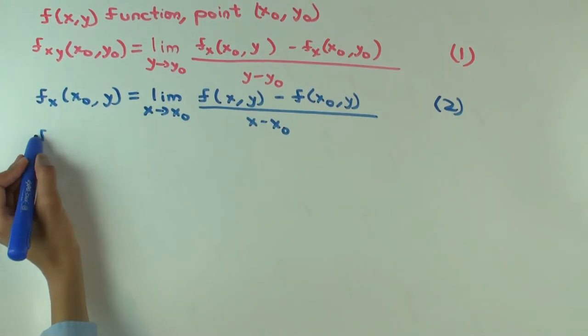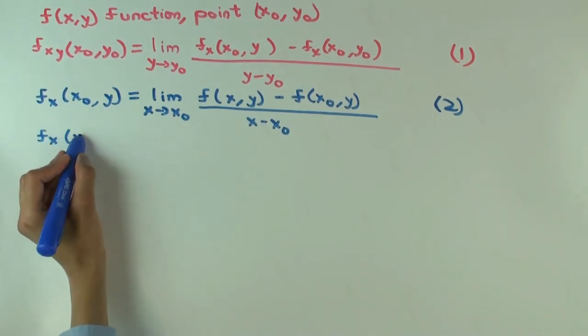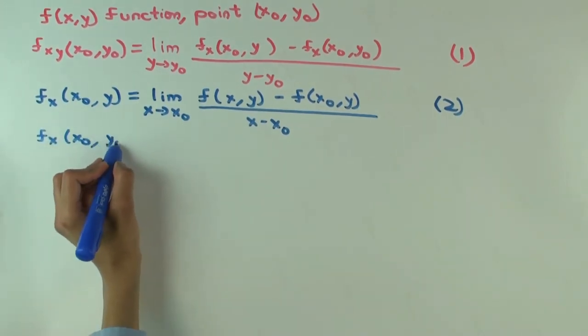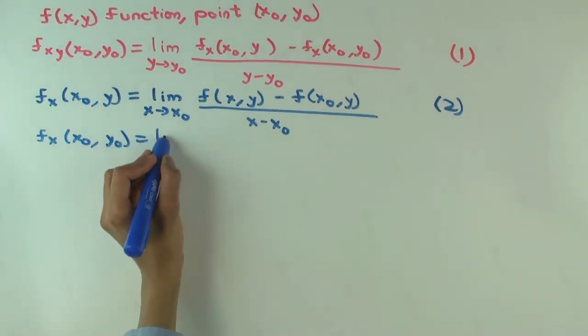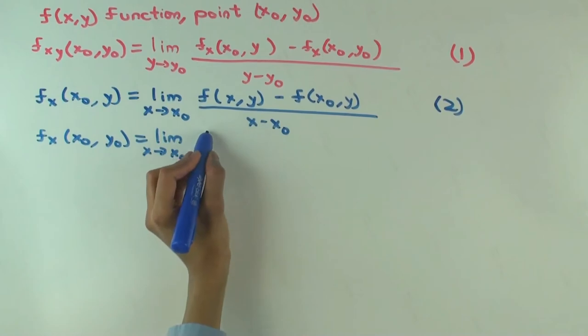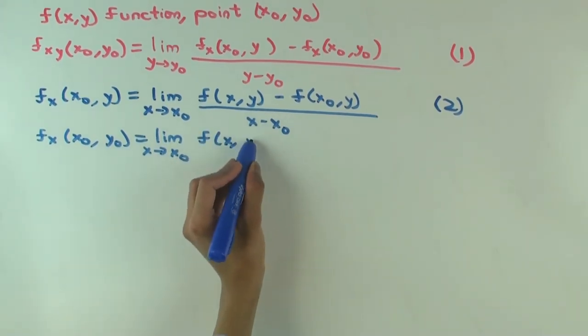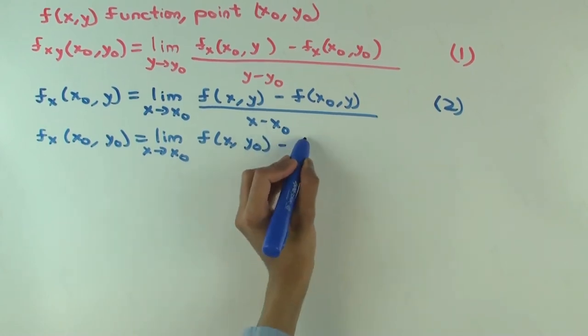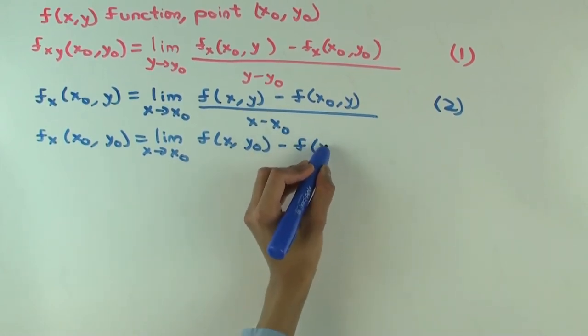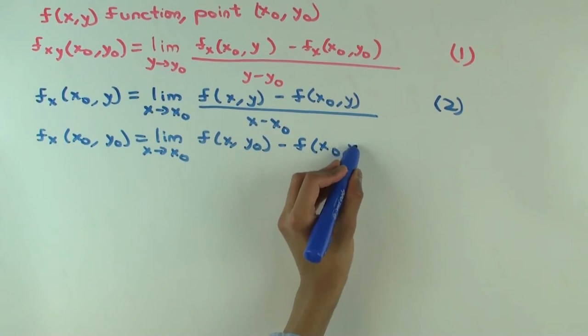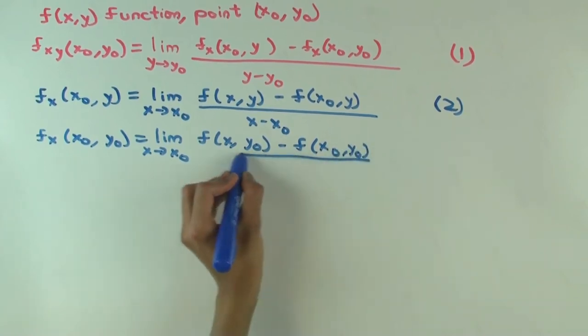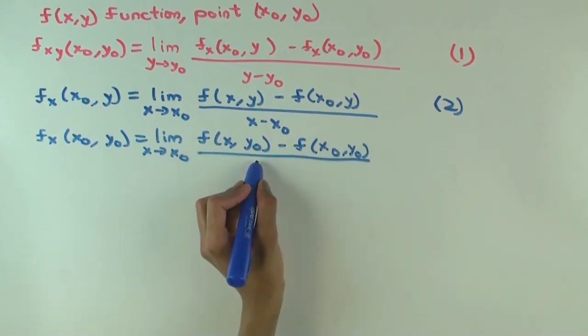Now let's do f sub x of (x0, y0). This will be the same as the above except we'll have y0 in place of y. So it's limit as x approaches x0 of f of (x, y0) minus f of (x0, y0) over x minus x0.